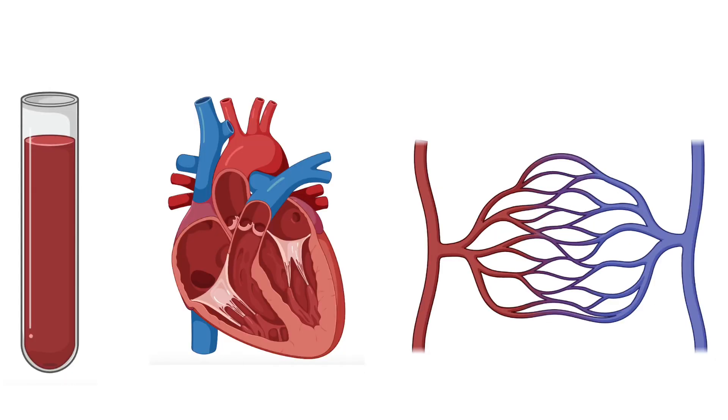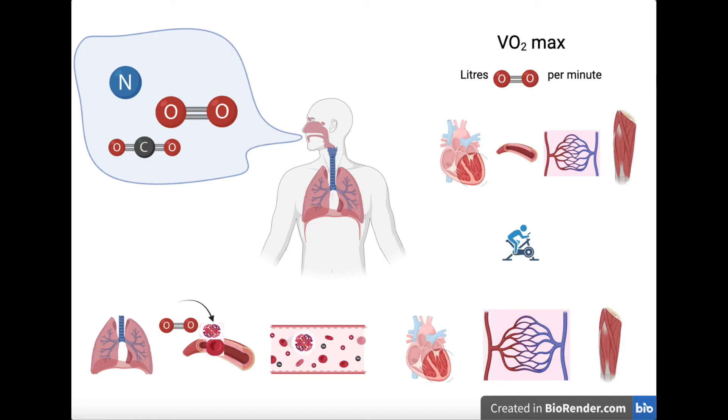Without a large blood volume, a strong left ventricle, and plenty of capillaries, we one, lack the ability to pump as much blood, and two, lack the ability to extract as much oxygen as we could. Again, the best way to increase this is through exercise. I hope you enjoyed this brief look at oxygen delivery and VO2max.